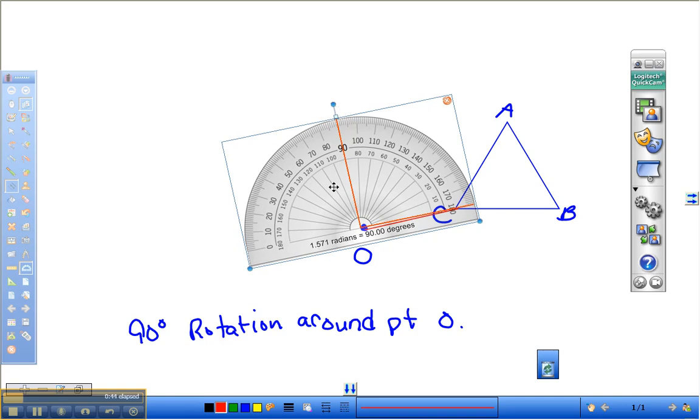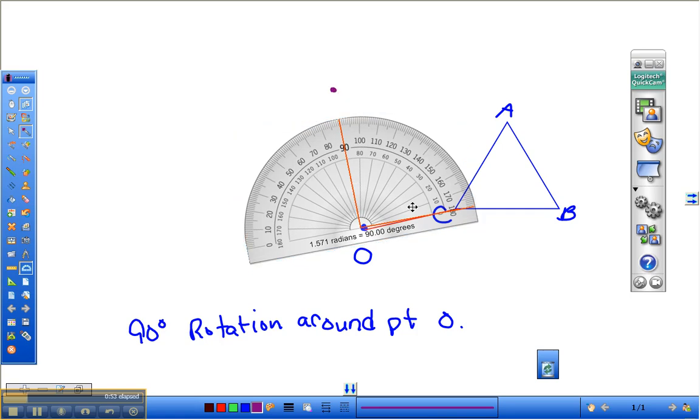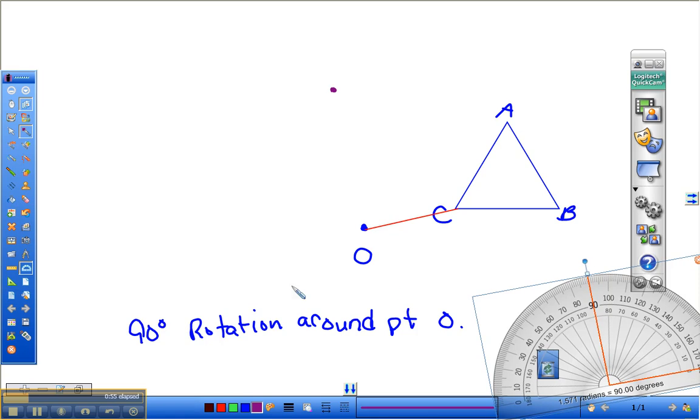We want a 90 degree angle, right? So we're going to mark our 90 degree angle. Move our protractor back out of the way, and then we're going to connect that line. So let's connect our point through that point, make sure it's nice and long enough.